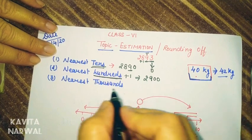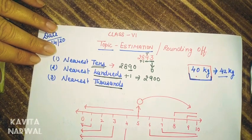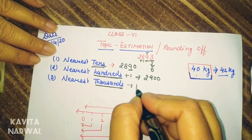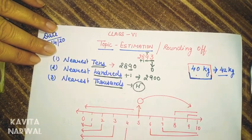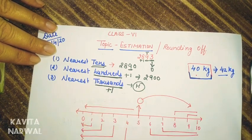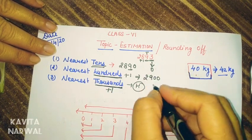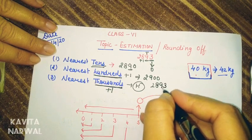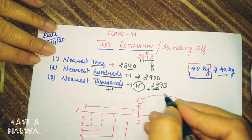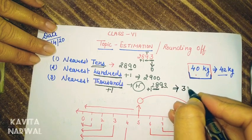For estimation nearest thousand, we have to observe the hundreds place. Same rule: if the hundreds place is 5 or more than 5, then add 1 to the thousands place. If less than 5, the thousands place remains the same. Here the hundreds place is 8, which is more than 5, so we add 1 and the rest of the digits convert to 0. So the round off of 2,893 nearest 1000 is 3,000.